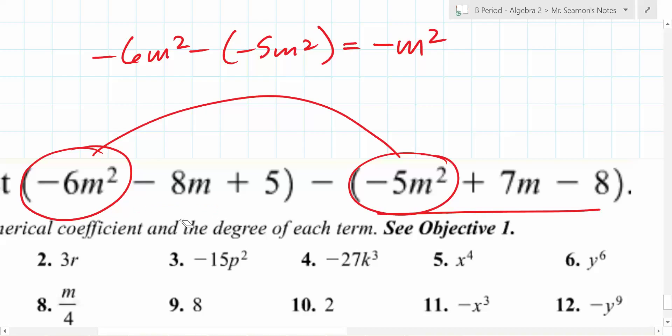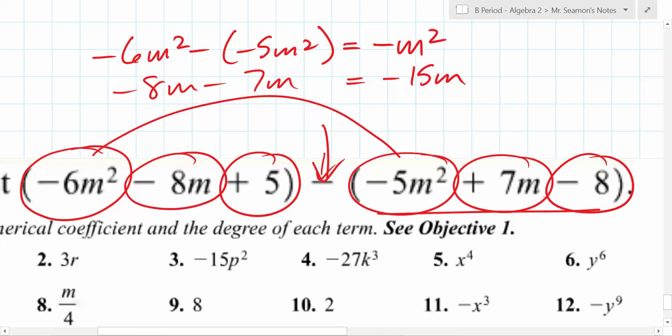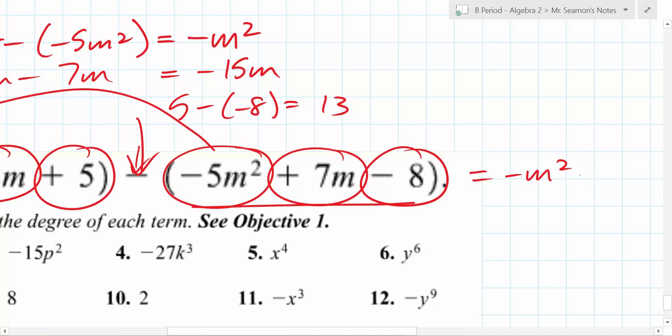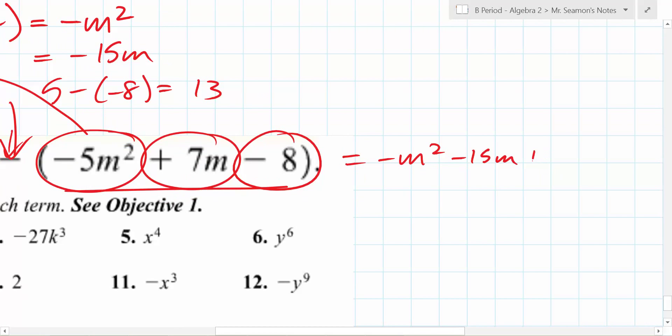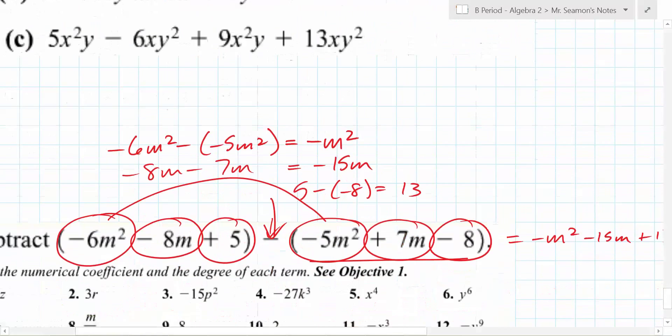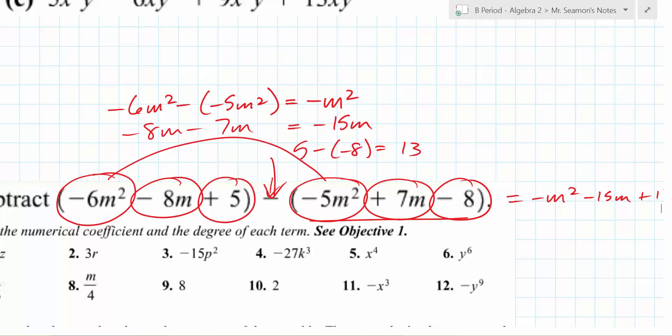But we're not done yet because there's also the negative 8m minus 7m. What's negative 8m minus 7m? Negative 15m. And what's 5 minus negative 8? 13. 5 minus negative 8 is 13. So the answer to this would be negative m squared minus 15m plus 13. Yes? Distributed negative 1. Absolutely. You could have just distributed negative 1. Absolutely. The key thing here, everybody, if you take away one thing, like terms. Like terms have the same what?